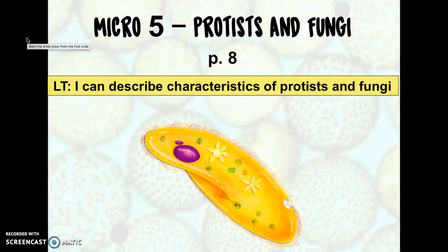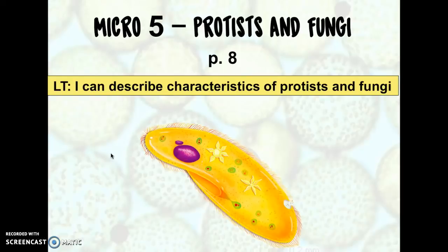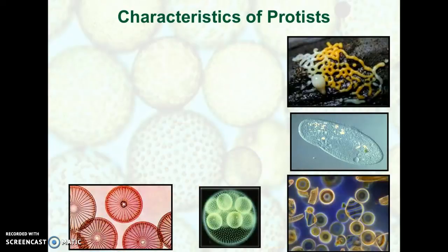Hey super scientists, we're continuing with your study of pathogens and microorganisms, and we're on page 8 in your microbiology lab notebook. The two pathogens we're looking at today are protists and fungi — fungi as in the plural of fungus. So we're looking at the characteristics of each of these different types of microorganisms.